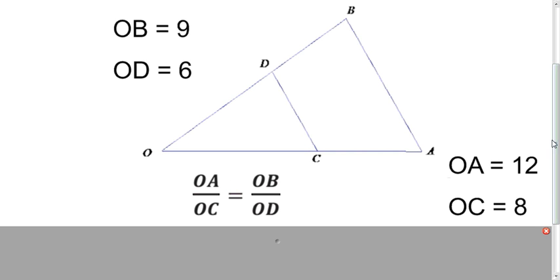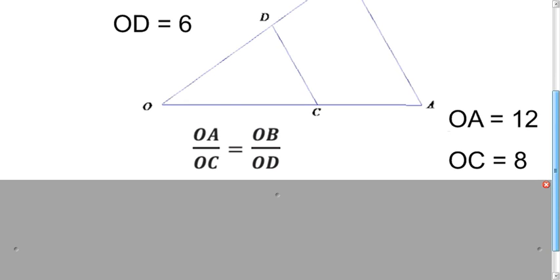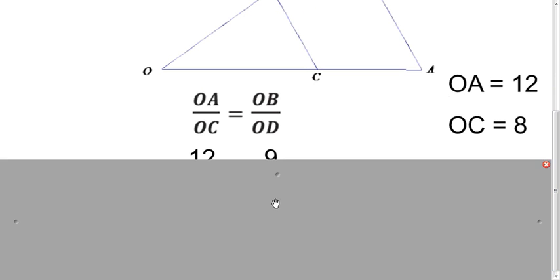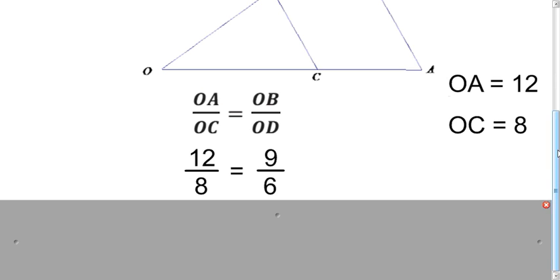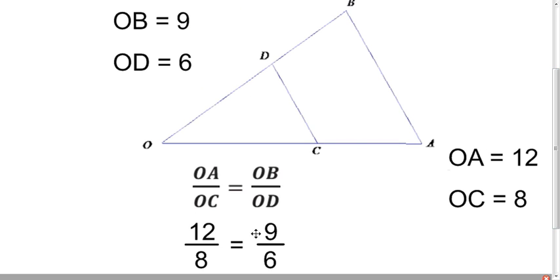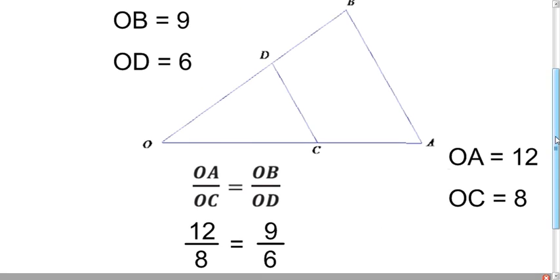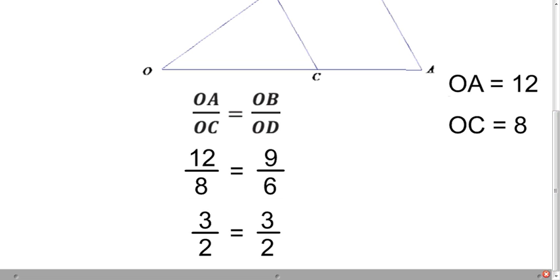If we substitute into this proportion, we will get two equivalent ratios. That gives us 12 over 8, which should be the same as 9 over 6, and they'll simplify to 3 halves, or 1.5. So we have a side splitter.